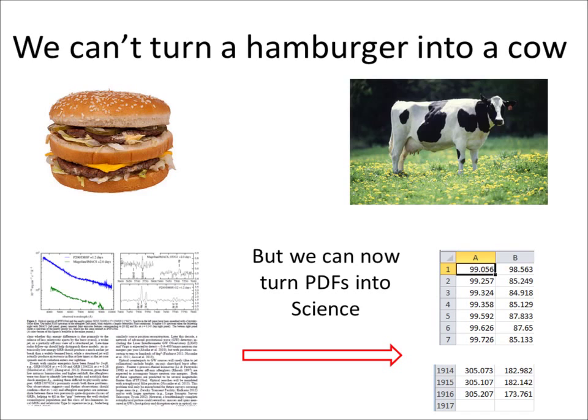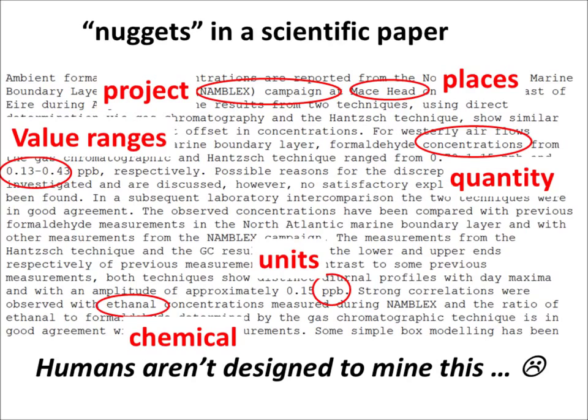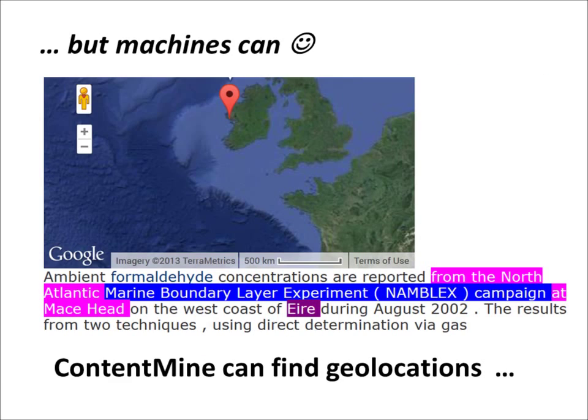We really can turn PDFs into science. Here's a bit of really dense text which most humans would run away from, but machines can extract all the facts in that. And here you can see how they've located the place where the experiment took place.